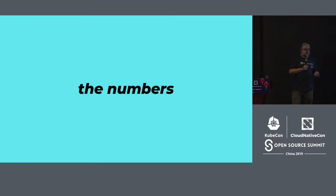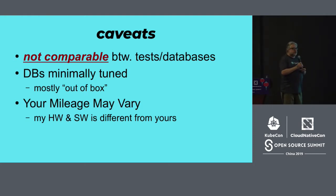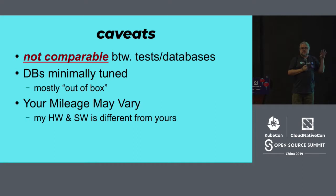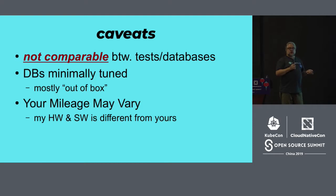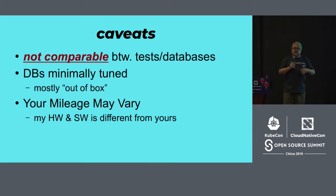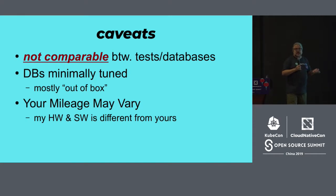Let's look at some numbers — but with a caution: please do not compare numbers between different benchmarks and different databases. These numbers are not meant to be comparable. The TPCC benchmark for CockroachDB does not perform the same activity as pgbench for Postgres. The databases were minimally tuned on purpose — I did the pro forma performance tuning you could do in 10 minutes, because I didn't want this to be an exercise in database tuning; my goal was to test the cloud-native platforms.